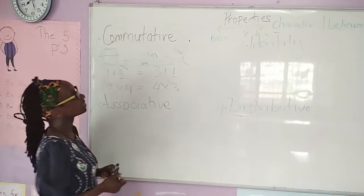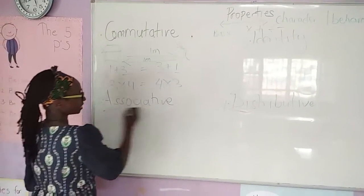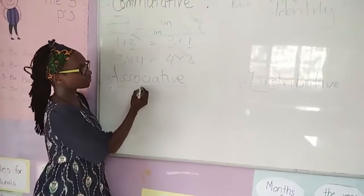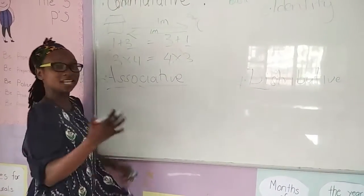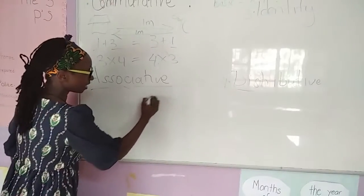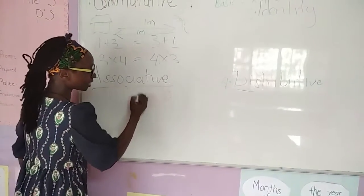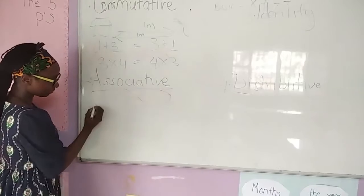Another property we look at today is associative. Now associative comes from the word association, of being friends or being together in a group. Together. In math we usually have these brackets.